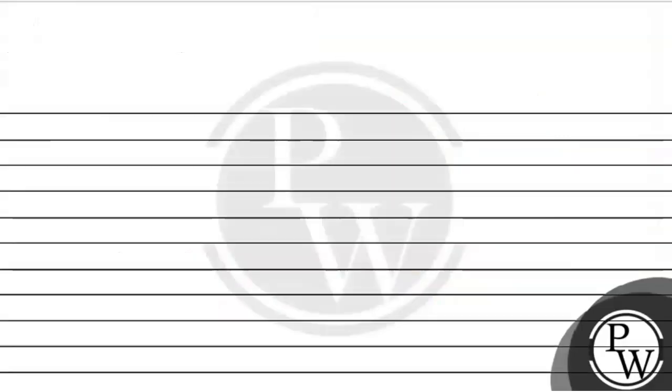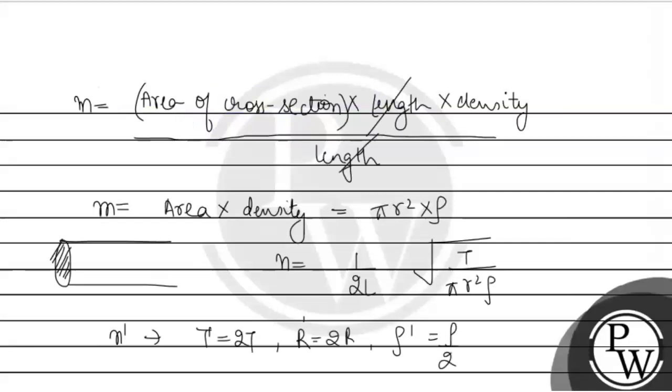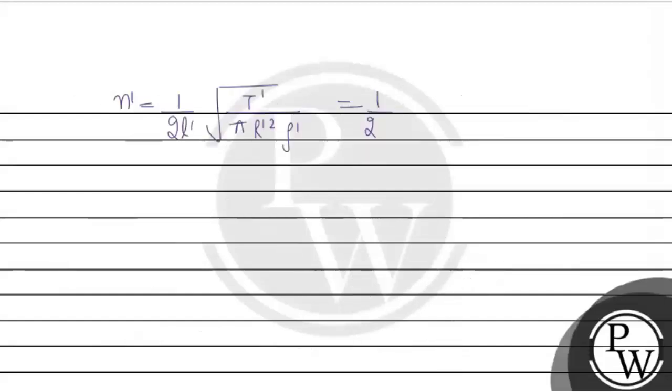So, we will put all these values. So, n prime will be equal to 1 upon 2L prime under the root of T prime divided by pi r prime square rho prime. So, that will be 1 over 2. Length may change aya. Tension may, radius may and density may. So, length will remain same. 1 upon 2L under the root of.